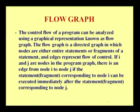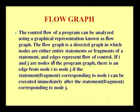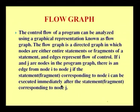Before we deeply understand path based testing, we will try to understand what a flow graph means. The control flow of a program can be analyzed using a graphical representation known as a flow graph. The flow graph is a directed graph in which nodes are either entire statements or fragments of a statement, and edges represent flow of control. If i and j are nodes in a program graph, there is an edge from node i to j if the statement corresponding to node i can be executed immediately after the statement corresponding to node j.